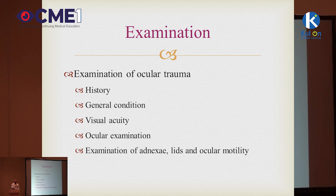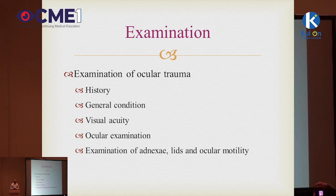We then proceed to examination of the patient, most importantly visual acuity, then examination of ocular motility, the eyelids, and surrounding periocular structures, and then the intraocular examination. The intraocular examination may not always be possible in someone with a globe rupture or severe ocular trauma because they may have a very swollen eyelid that you cannot open at bedside, and they may have a corneal laceration, so you have to be very gentle.